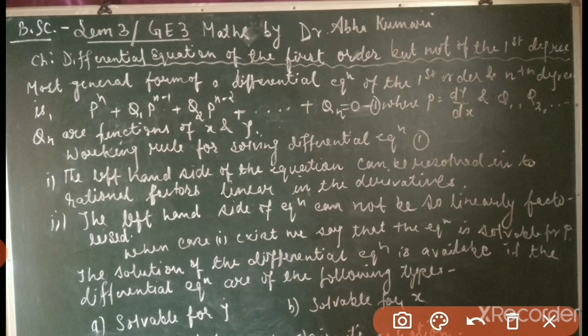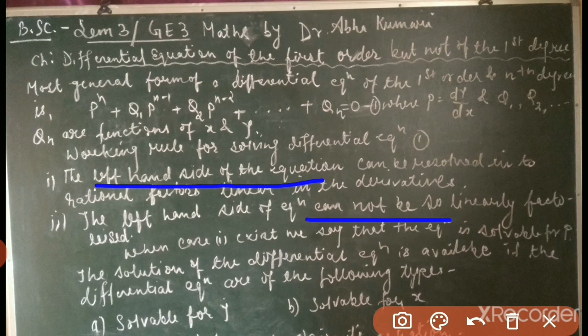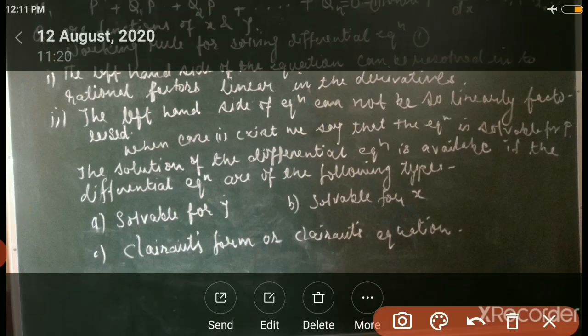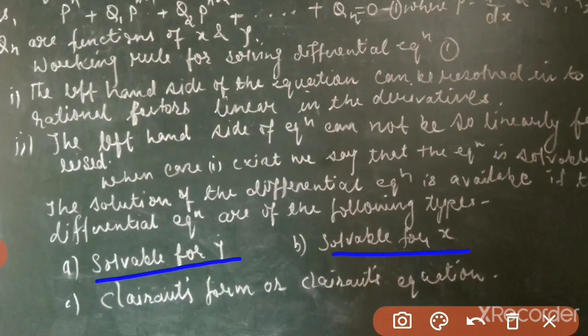The first working rule: if the left-hand side of the equation can be resolved into rational factors linear in the derivatives, we can factorize it and find the solution. The second case: if the left-hand side cannot be so linearly factorized, we have three cases — the equation is solvable for p, solvable for x, or solvable for y (Clairaut's form). We will see all these cases one by one, starting with Case 1 when the left-hand side can be resolved into linear factors.